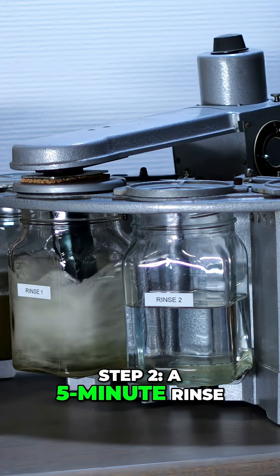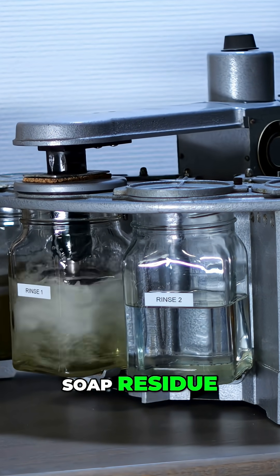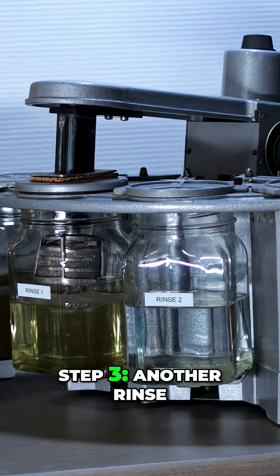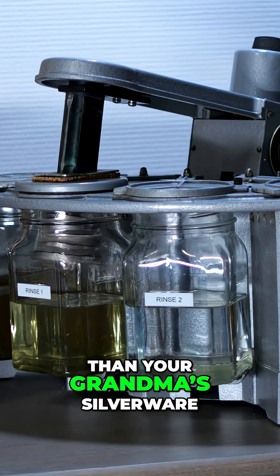Step two, a five-minute rinse in L&R rinsing solution, because no one likes soap residue, especially not your balance wheel. Step three, another rinse. Yes, again, these parts are now cleaner than your grandma's silverware.